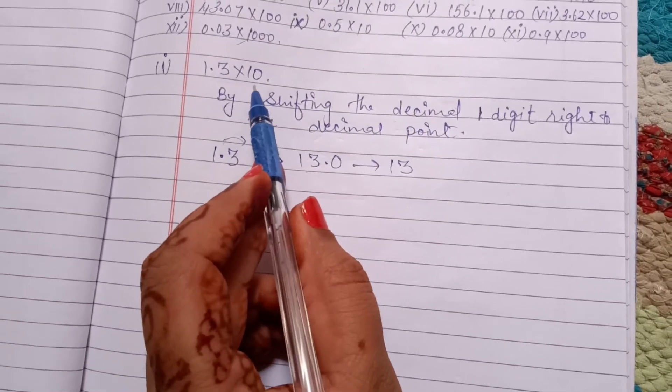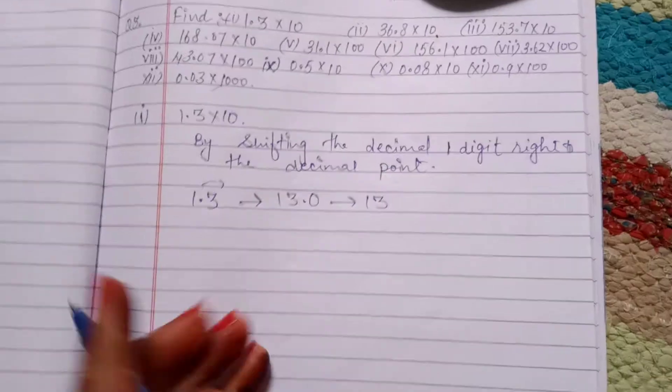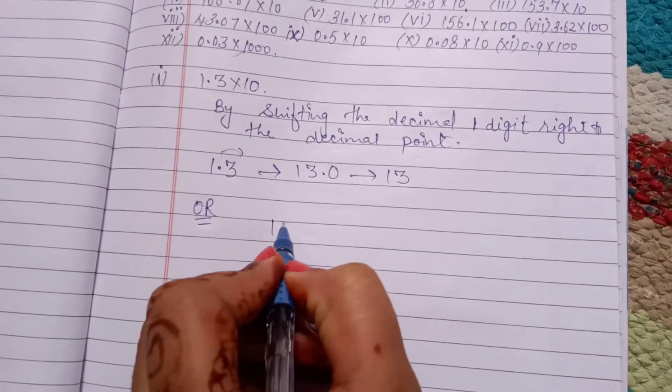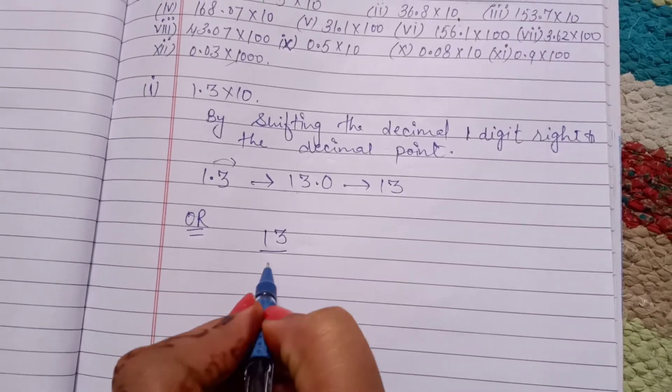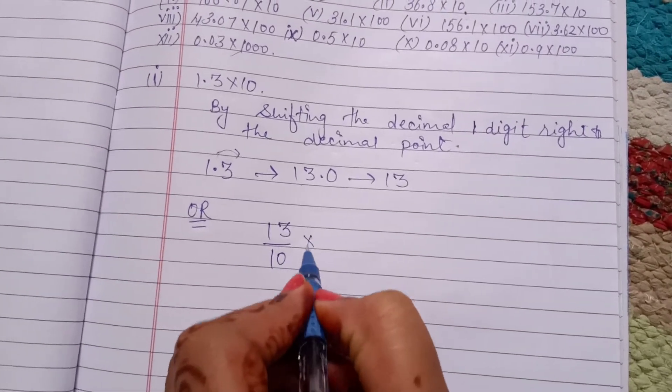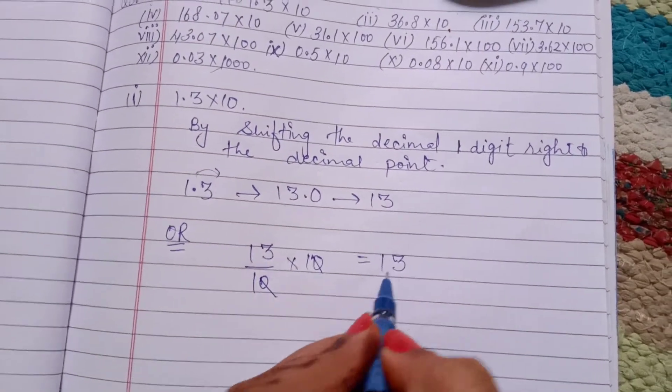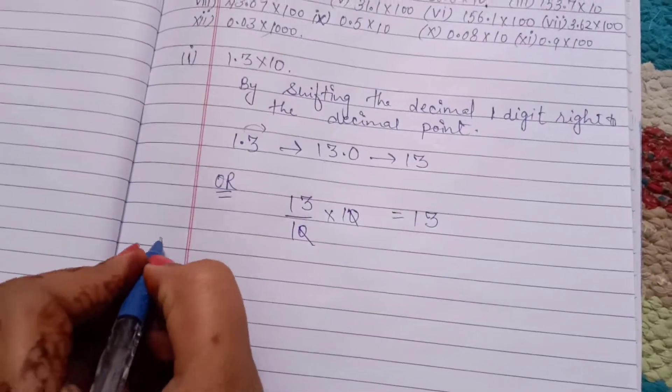If here 10, or second method is by removing the decimal point. 13 over 10 into 10, this cancel, your answer you get 13. Second part.